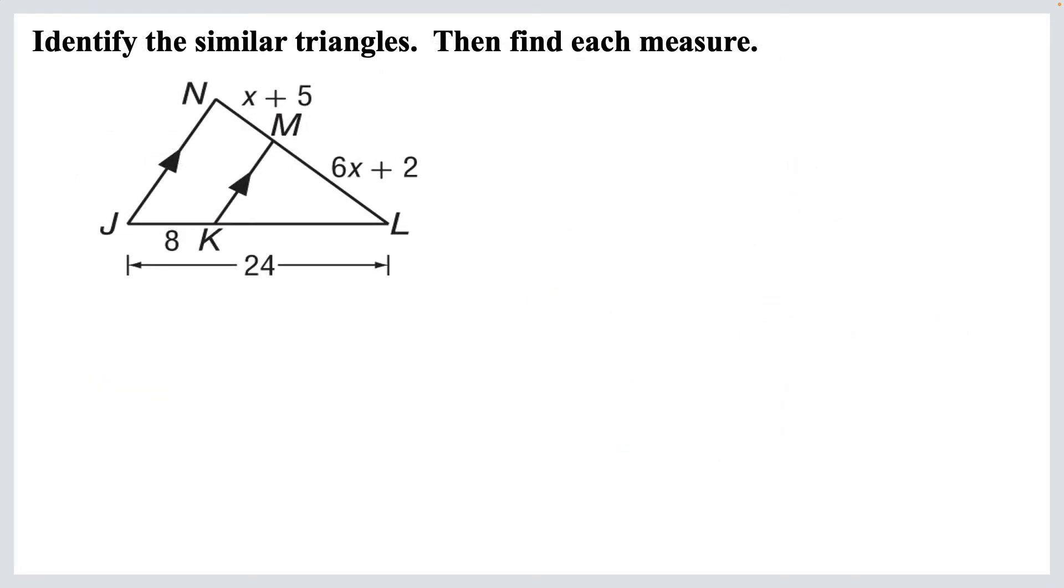So this one says identify the similar triangles and then find each measure. Okay, there's a lot going on here. Let's start with this. Do you see the arrows on the two lines in those triangles? That means that those are parallel lines. And if we have parallel lines, we can also identify, look at this, two sets of corresponding angles. And if you've got two parallel lines cut by a transversal, you know that corresponding angles are congruent.